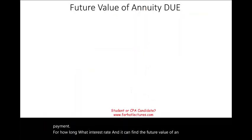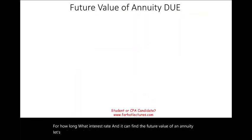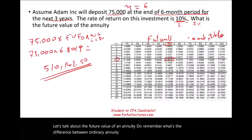Let's talk about the future value of an annuity due. Remember, what's the difference between ordinary annuity and annuity due? In an ordinary annuity, when Adam started to make those payments, the first $75,000 took place at the end of period one.